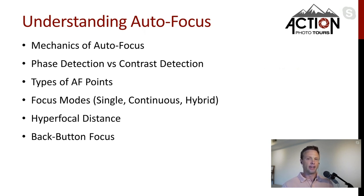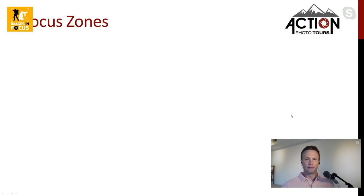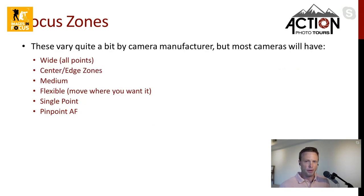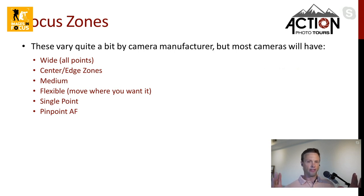Today we're going to get even more into the nitty gritty and talk about advanced autofocus settings and techniques. First, I want to touch on focus zones. These vary quite a bit by camera manufacturer — we're not going to get into Sony has this, Canon has this, Nikon has that. We'll give you an overview of what's available, and it's up to you to consult your camera manual. Most cameras are going to have a wide setting where all the points are active and the camera decides which ones it activates.